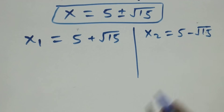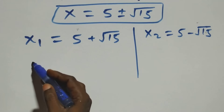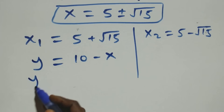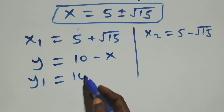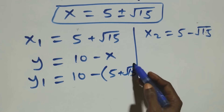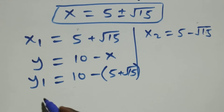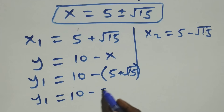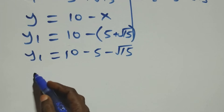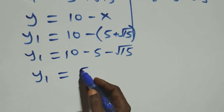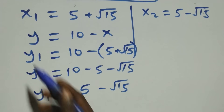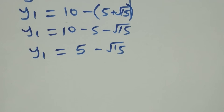We find y using equation three, y equals to ten minus x. So y₁ equals to ten minus x₁, which is ten minus (five plus root fifteen). Opening the bracket: y₁ equals to ten minus five minus root fifteen, which gives y₁ equals to five minus root fifteen.